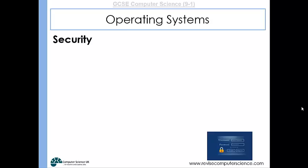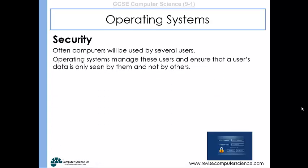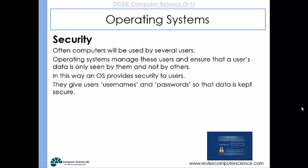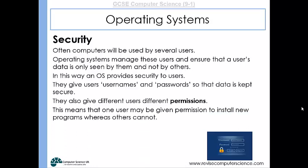The operating system also provides security, not in the way that antivirus software or a firewall would, but by allowing several users to each have their own accounts on a single computer. Operating systems manage these users and ensure that each user's data is only seen by them and not by others. Users are given usernames and passwords so that data is kept within their own account. You can also give different users different permissions — for example, one user may be given permission to install new programs whereas others cannot.